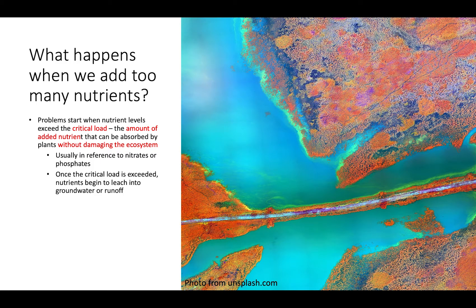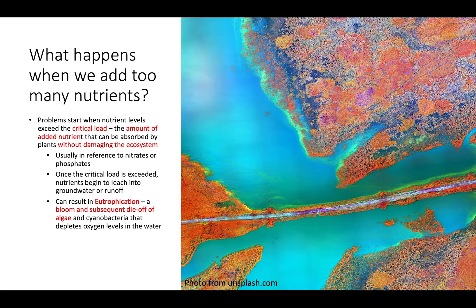Once we actually exceed that critical load, the plants are no longer able to take up those nutrients, and we're going to see those nutrients start to leach into the groundwater or into the runoff. When those nutrients are then introduced into aquatic ecosystems, we can see something called eutrophication — when we have a really large algal bloom and that algae subsequently dies off. When that algae dies off, we're going to have reduced oxygen concentration in the water, and it can lead to something called a dead zone, where there's not enough oxygen to support organisms.